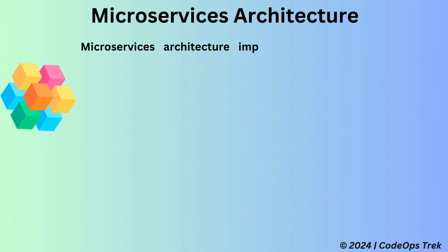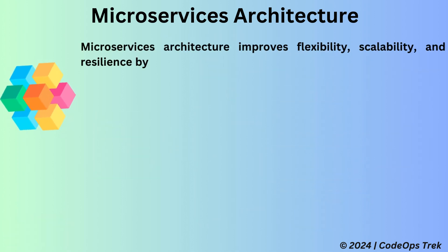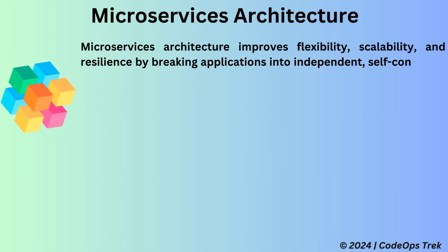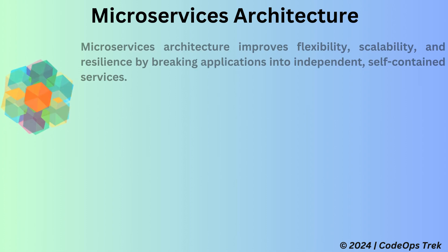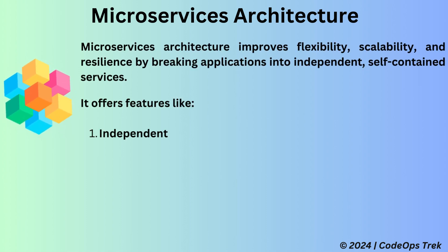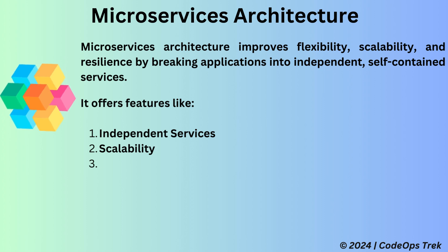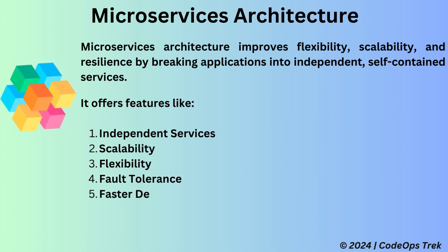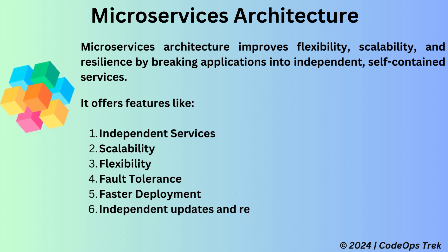Microservices architecture improves flexibility, scalability, and resilience by breaking applications into independent, self-contained services. It offers features like independent services, scalability, flexibility, fault tolerance, faster deployment, and independent updates and releases.